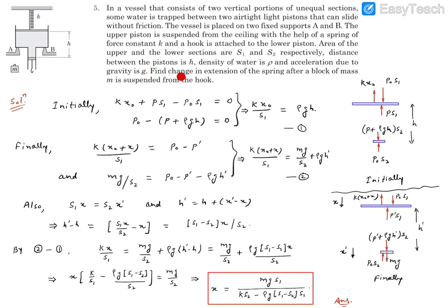The question is: find the change in extension of the spring after a block of mass M is suspended from the hook. So this vessel has different cross-sections — S1 upside, S2 downside — and liquid water is filled in between. The two pistons are massless. The upper one is connected with the spring and the lower one is hanging. The gap between the two pistons is H. Now we want to hang block M on this hook. Once we do this, there will be some disturbance, and for the system to return to equilibrium, the spring should extend by some more amount. What is that extension? That's what we need to find out.